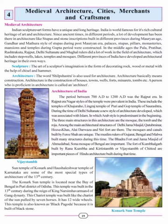The period between 700 AD to 1200 AD was the Rajput era. In this era, Nagar styles of temples were prevalent in India, including the temples of Khajuraho, Lingraj Temple of Puri and Gop Temple of Saurashtra. During Delhi Sultanate, a new style of architecture developed associated with Islam, with Arab style predominant. The three main structures were the mosque, the tomb and the roja. Main architectural structures of Delhi include Jama Masjid, Qutub Minar, Hauz Khas, Alai Darwaza and Siri Fort.